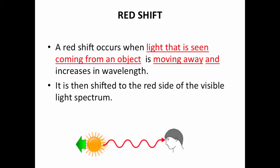Let's talk about when scientists say redshift. A redshift occurs when light that is seen coming from an object is moving away and it is increasing in wavelength. It is then shifted to the red side of the visible light spectrum. Because the universe is always expanding, and this is one of the evidences that backs up the theory that the universe is expanding,